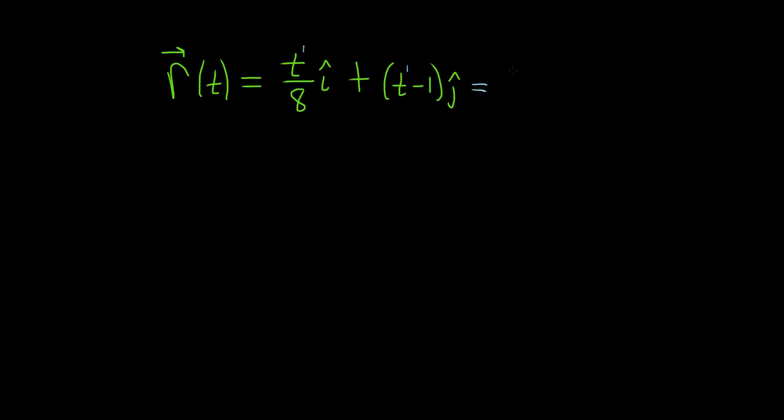Recall that you can write this in component form if you like. You can write it as angle bracket t over 8 comma t minus 1. And we can just start plugging in values of t and graph, but it's a little more fun to actually rewrite this in what's called rectangular form.